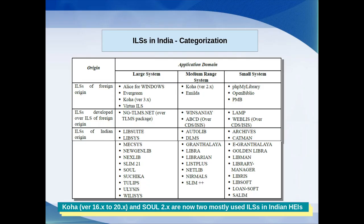From this slide you can have an idea about the Indian situation related to use of ILS. There are three categories: ILS of foreign origin — both commercial products like Alice for Windows, Virtua ILS, and open source products like Evergreen and Koha. Then the second category is ILS developed on top of ILS of foreign origin, and the third category is ILS of pure Indian origin.